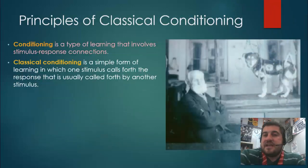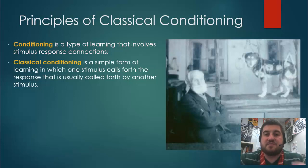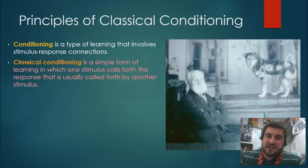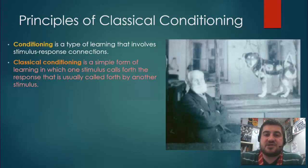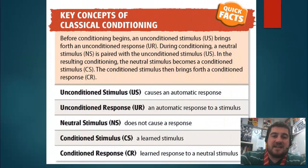Conditioning is a type of learning that involves a stimulus — you're shown a stimulus and you're going to respond to it in a certain way. For example, if you're sprayed in the face with water, you automatically blink and flinch; you don't have to learn that. Classical conditioning is when one stimulus calls forth the response that is usually called forth by another stimulus. Here are the five main definitions of classical conditioning.